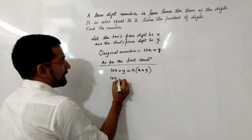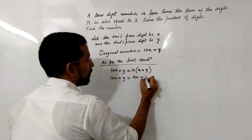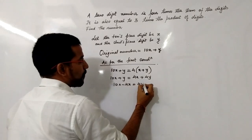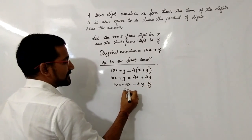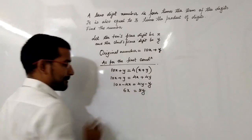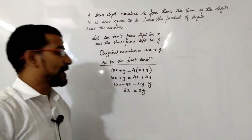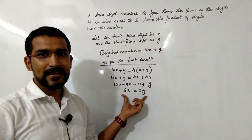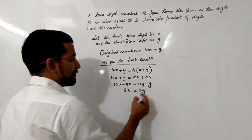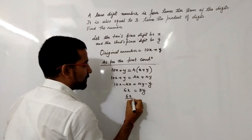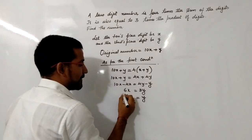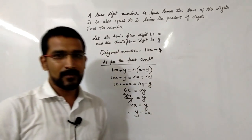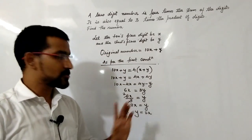Solving this: 10x + y = 4x + 4y. So 10x − 4x = 4y − y, giving us 6x = 3y. Now, since we need to solve by quadratic equation, we need one variable. Making y the subject: y = 6x/3 = 2x. Therefore, in the coming equations, we can substitute y = 2x.